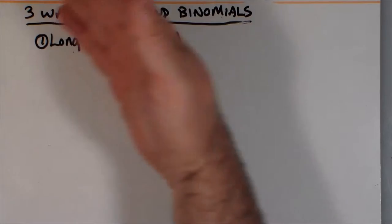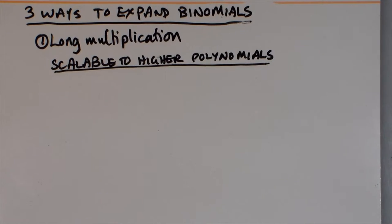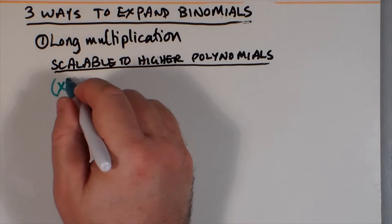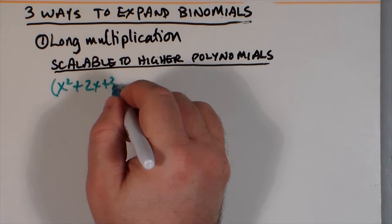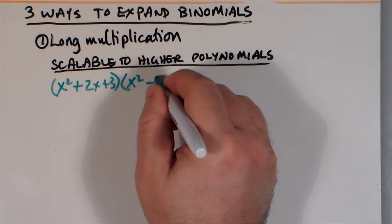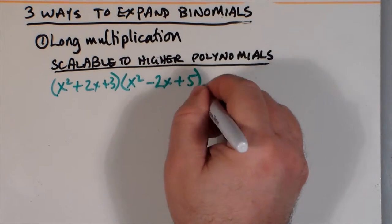This way of doing it is scalable to higher-order polynomials as well. For example, I can multiply a binomial by a binomial, but what about a trinomial by a trinomial? I'll make these two slightly different to show you that I can also do this same technique to a quadratic multiplied by a quadratic.